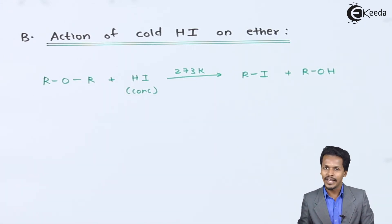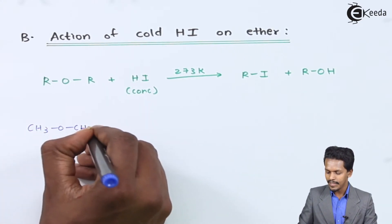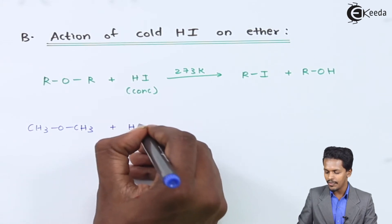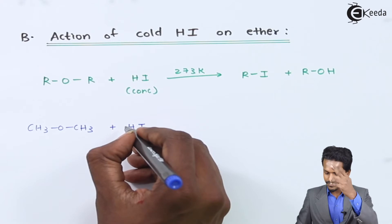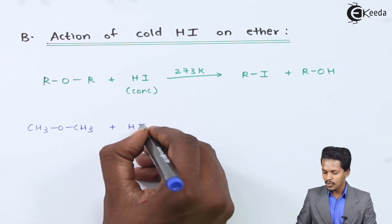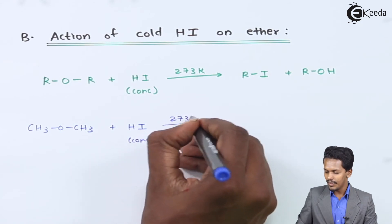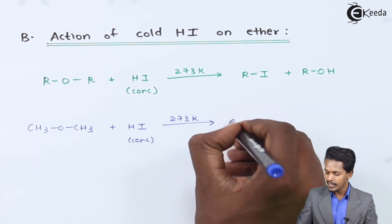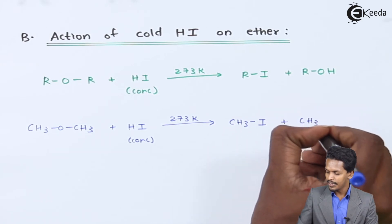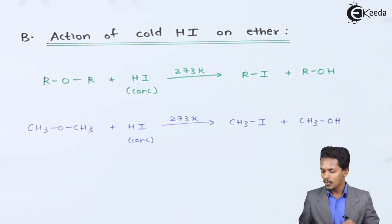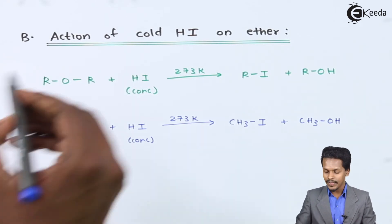For example, CH₃OCH₃ (methoxymethane) treated with cold, concentrated HI at 273 Kelvin gives CH₃I (methyl iodide) along with CH₃OH (methanol). This is the reaction of a simple ether with cold HI.